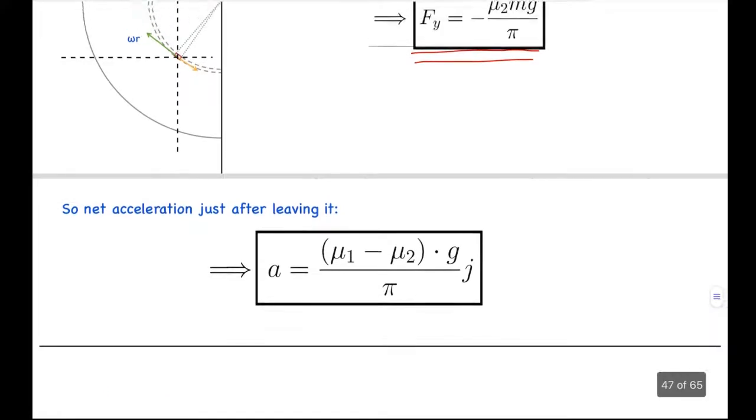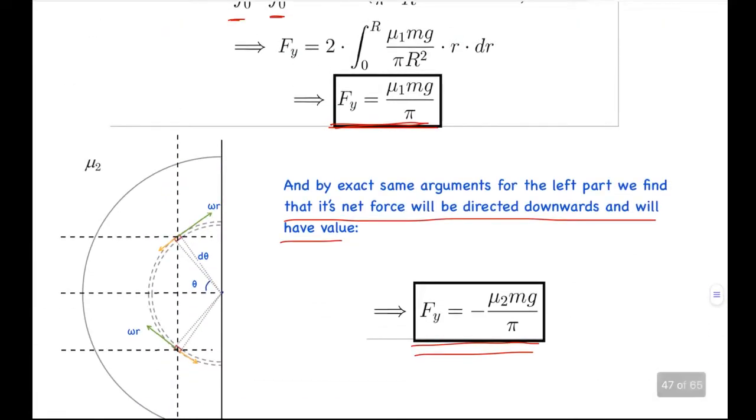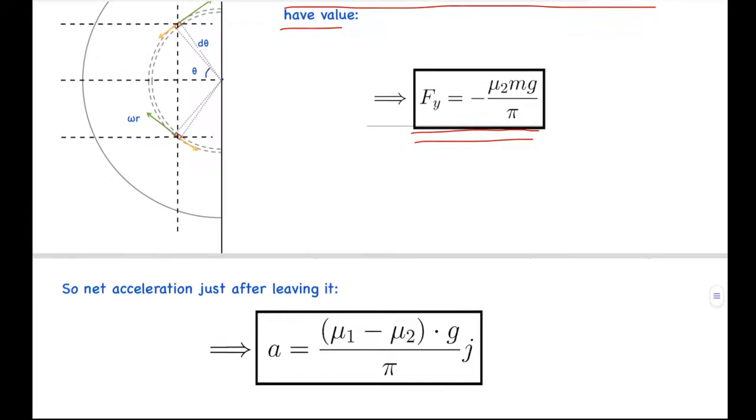So net acceleration just after leaving it will be, so the net force will be mu1 mg by pi minus mu2 mg by pi. So from here we get that the net acceleration just after leaving it will be, dividing this over mass. So this will be the final acceleration.